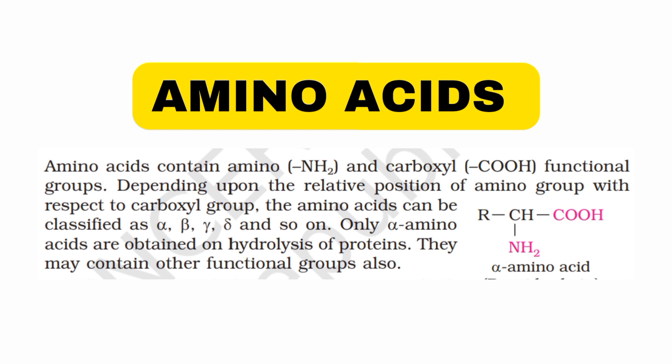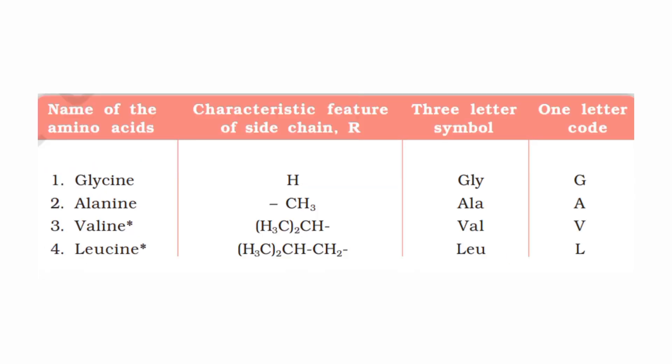Amino acids can be at alpha, beta, or gamma carbon positions. There are 20 types of amino acids, differentiated by their R side chains. For example, glycine is one type of amino acid. Side chains can include alcohol groups, hydrogen, and others.